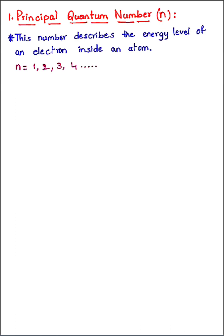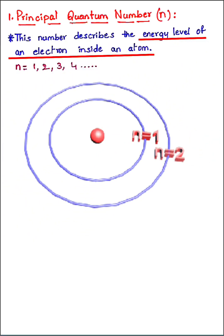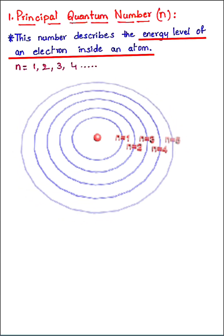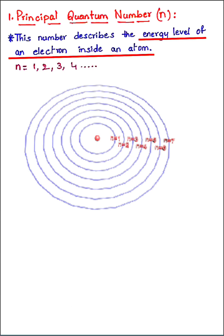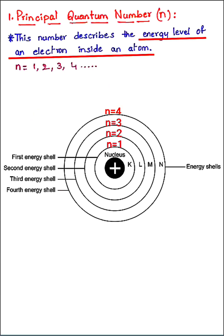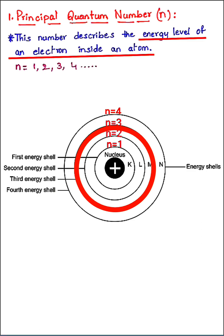The principal quantum number describes the energy level of an electron inside an atom. Looking at the picture, we have Bohr's model of an atom. The first shell represents the first energy level (n=1), the second circle is the second energy level (n=2), and the third circle is the third energy level (n=3). This is how the principal quantum number describes the energy level of an electron inside the atom.